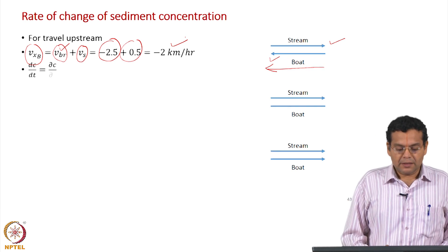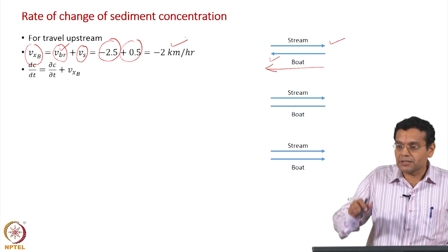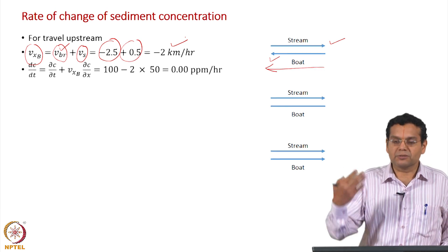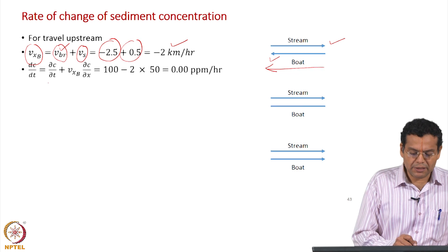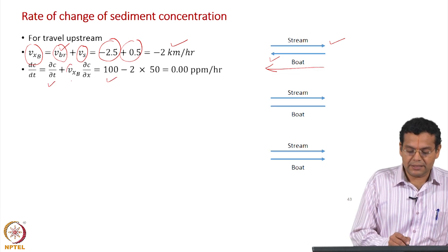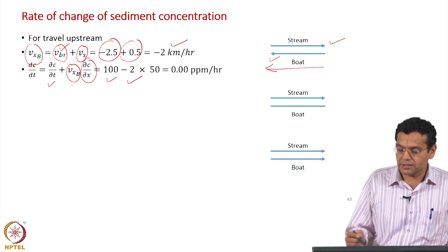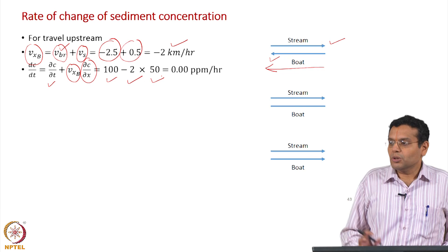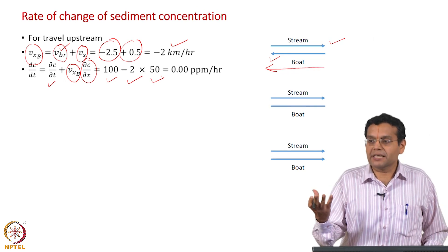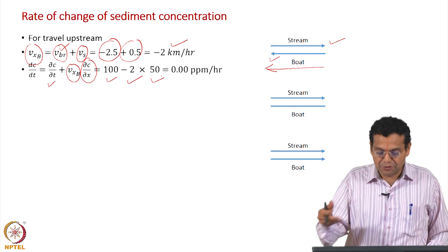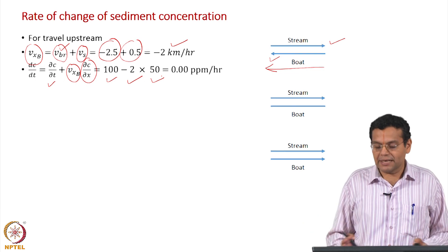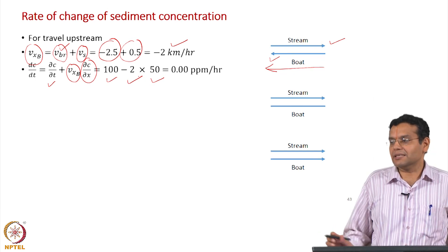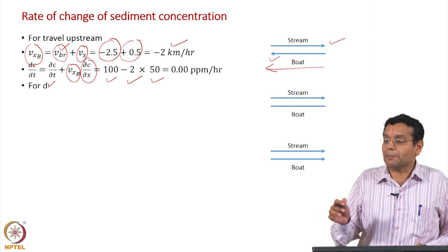Substituting: the rate of change of concentration measured sitting on the boat moving at −2 km/h equals ∂c/∂t + v_xb · (∂c/∂x) = 100 + (−2)(50) = 0 ppm per hour. The two terms just cancel each other — 100 from the local term and −100 from the convective term — so there is no apparent change in concentration. That is why it is called the 'apparent' change.